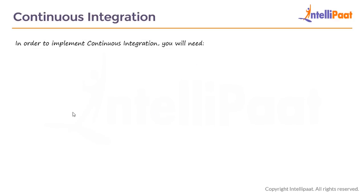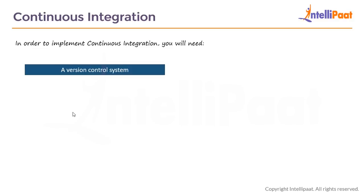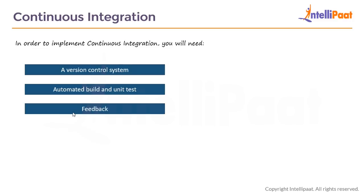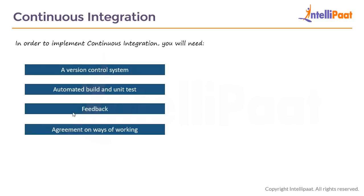To implement continuous integration, you will need the following. First, a Version Control System (VCS) that stores all source code checked in by the teams and acts as a single source of truth. Second, automated build and unit tests — it's not sufficient if the code works only on the developer's machine; every commit to the VCS should be built and tested by an independent CI server. Third, some form of feedback so developers are notified when their change breaks the build, for example via email notifications. Finally, an agreement on working practices — everyone on the team should check in incremental changes rather than waiting until fully developed, and their priority should be to fix any build issues that arise.